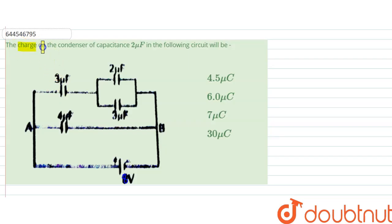The question says the charge on the condenser of a capacitor 2 microfarad in the following circuit will be what. So what would be the amount of charge here? First of all, we will find the equivalent circuit.